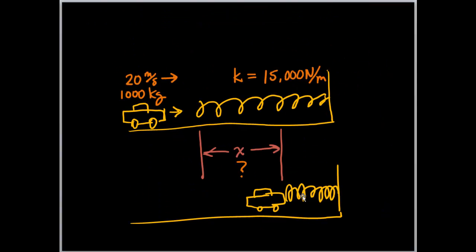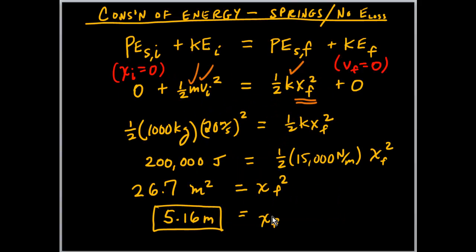So, we know the spring has to have 200,000 joules of potential energy. Why? Because that's what the car had coming in. And in order to make that happen, x final for that spring has to be 5.16 meters.